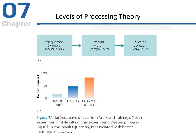Here's one example of the levels of processing theory being tested. In this particular example, participants were asked to tell whether or not a word they were presented with had capital letters. So the rule was to report whether there were capital letters in the word — for example, BIRD was presented, and the answer would be no, there are no capital letters. They would also have a rhyming condition, and last would be a fill-in-the-blank condition.